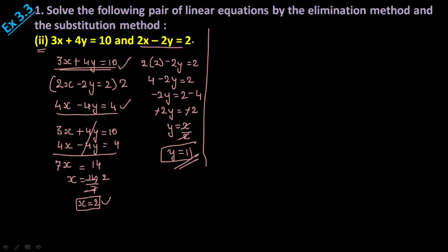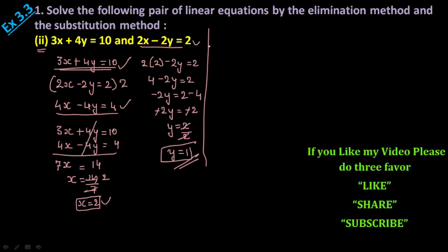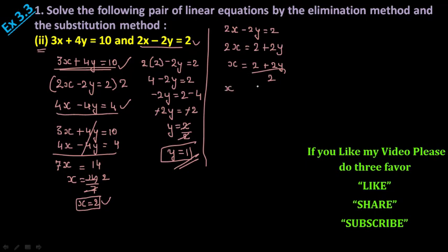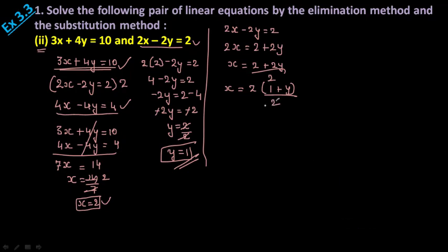Now I am going to solve by substitution. Using the second equation: 2x - 2y = 2. Take -2y to the other side: 2x = 2 + 2y, so x = (2 + 2y)/2. Take out 2 as a common factor from the numerator: x = 2(1 + y)/2. The 2s cancel, so x = 1 + y. Take this as result number 1.